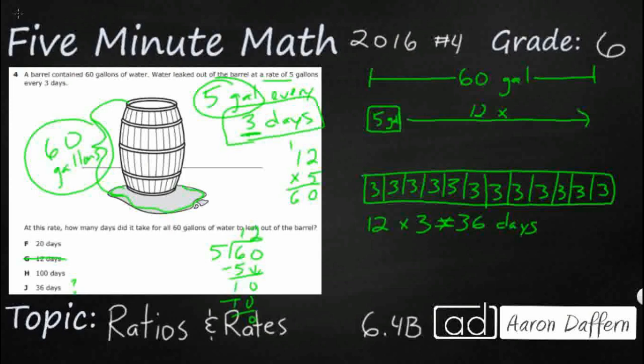But let's go ahead and see if there's a shortcut to do that. We can use a shortcut by using a ratio. So a ratio is a relationship between two quantities. And so we can find equal ratios, just like we're looking at equal fractions, because ratios can be seen three different ways. You can use a colon, 5 gallons to 3 days. You can use the word 'to', 5 gallons to 3 days.